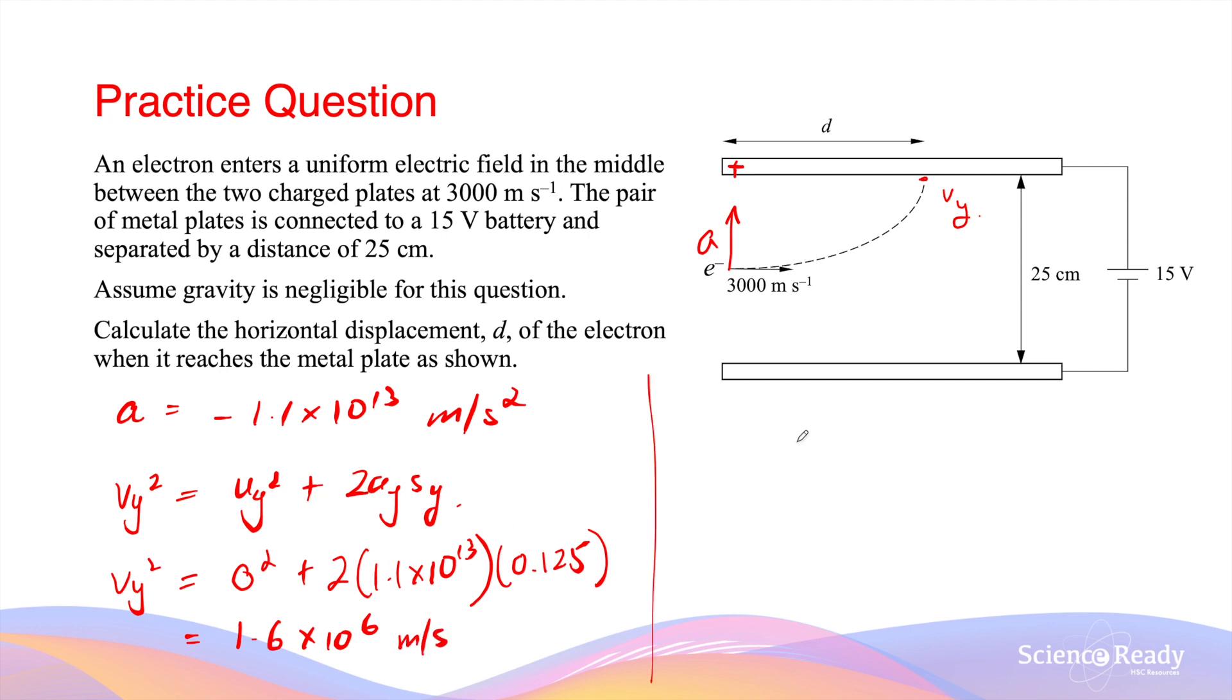I can use this final velocity in another kinematic equation, Vy equals Uy plus Ayt, to finally work out the time of flight. The time of flight here will be Vy minus Uy divided by Ay. Vy is 1.6 times 10 to the power of 6, Uy is 0, Ay is 1.1 times 10 to the power of 13. Our time of flight is 1.5 times 10 to the power of minus 7 seconds.